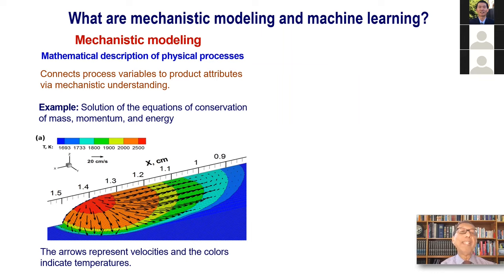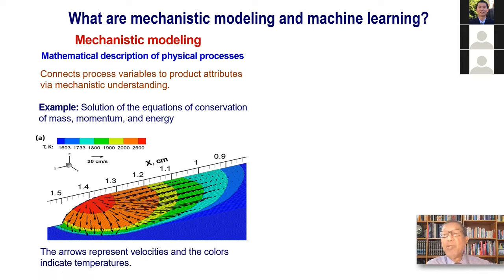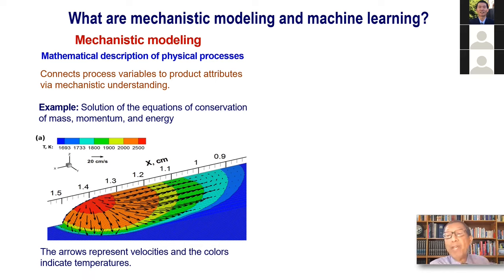An example is calculation of temperature fields. We do that by solving the equations of conservation of energy, mass, and momentum. Why momentum? Because once we melt the powder, it forms a pool of liquid that moves, carrying a lot of heat. A temperature and velocity field is set up that determines the geometry of the fusion zone, the cooling rate, and the microstructure and properties of the deposited material. Because the liquid pool is opaque, we cannot determine temperatures inside it experimentally — this is something a mechanistic model can do that experiments cannot.